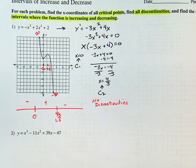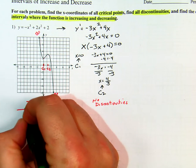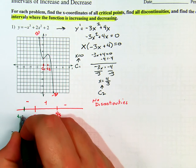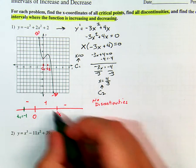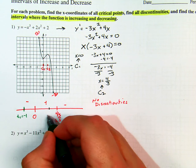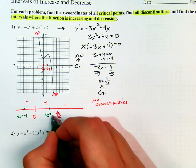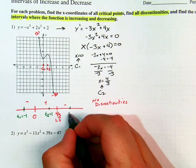If we don't have the graph, pick a test point. A good test point for the first interval would be negative 1. A good test point in the middle interval would be 1 — so T2 equals 1. And over here, T3 equals 2.